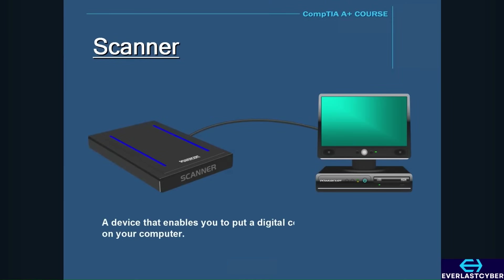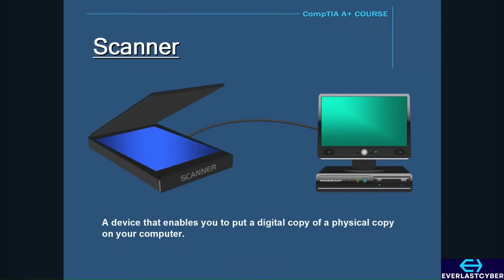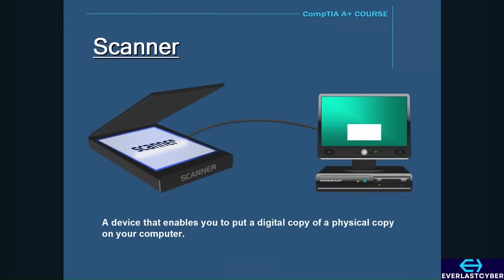A scanner is a device that enables you to create a digital copy of a physical document or photo on your computer. Scanners typically have a flatbed where you place the photo or document face down, and at the press of a button it will scan it. As the scanner moves across the document, it saves the image to your computer. Scanners often come in combination with a printer, or you can purchase one separately.